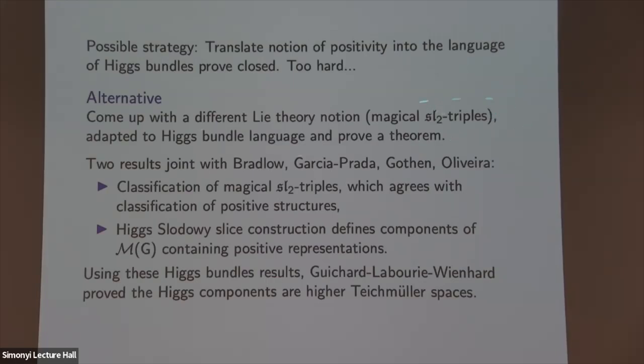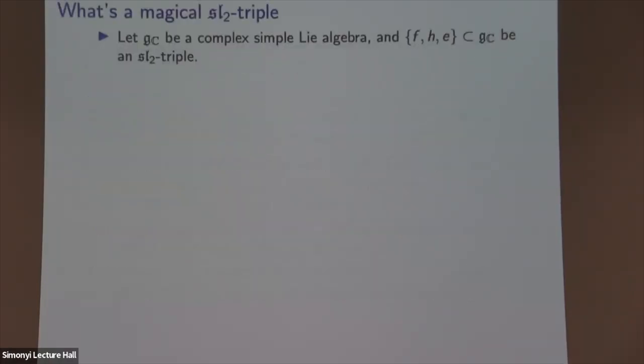Let me tell you the definition of a magical SL₂ triple. Let G_ℂ be a complex simple Lie algebra and (F, H, E) an SL₂ triple inside it. The magical condition is a special condition on such an object. V is the set of highest weight spaces — the kernel of ad(E) — and I can break V into two pieces: the zero weight spaces V₀ for H (the centralizer of the whole SL₂ subalgebra), plus the set of highest weight spaces with positive weights V₊.